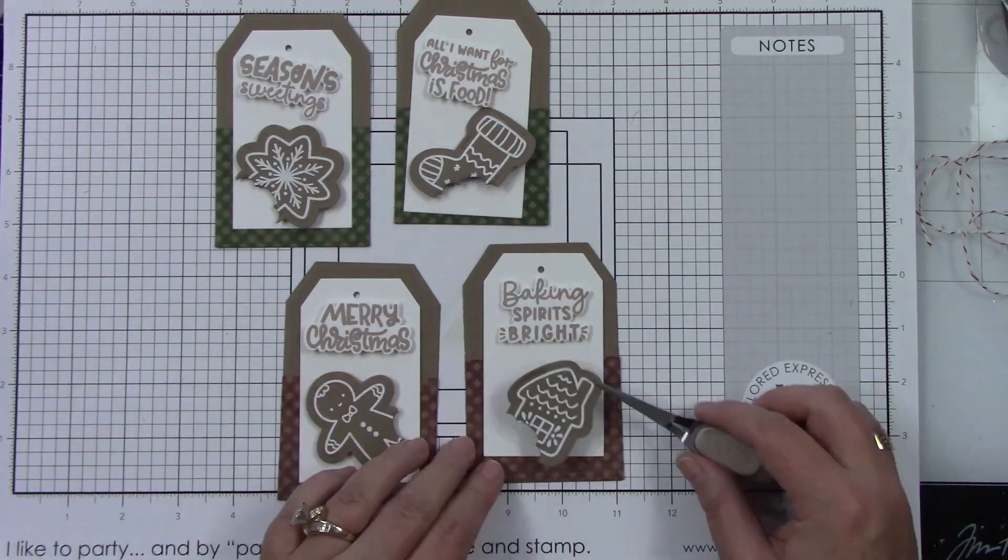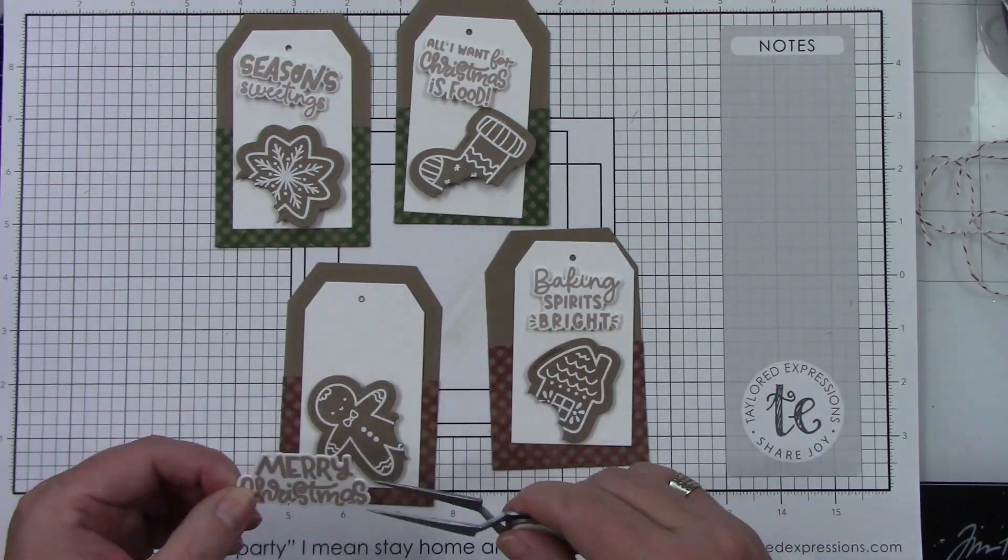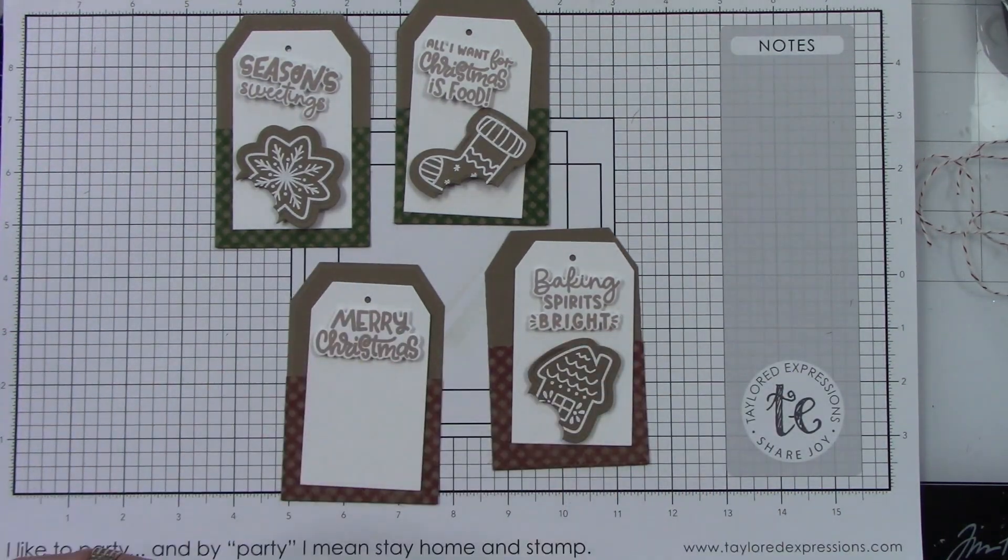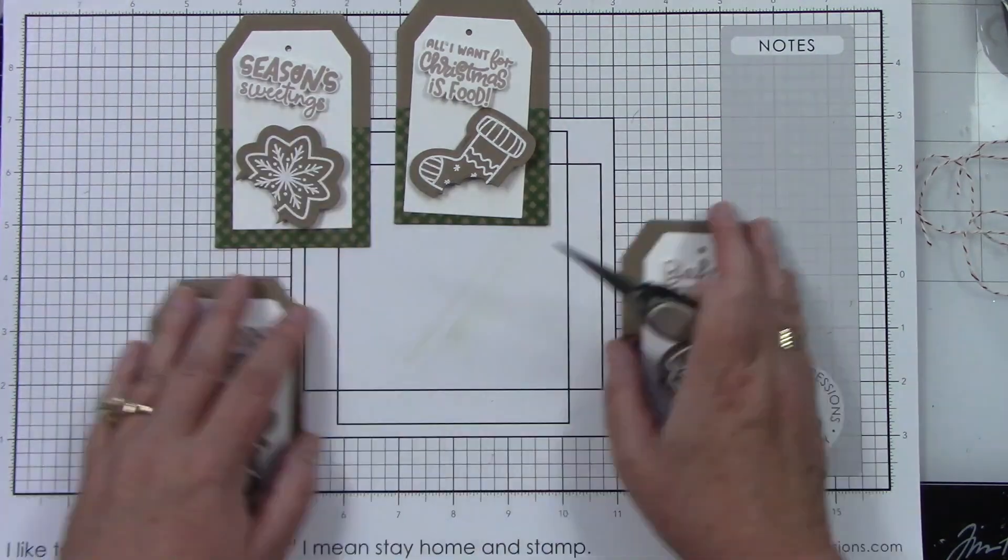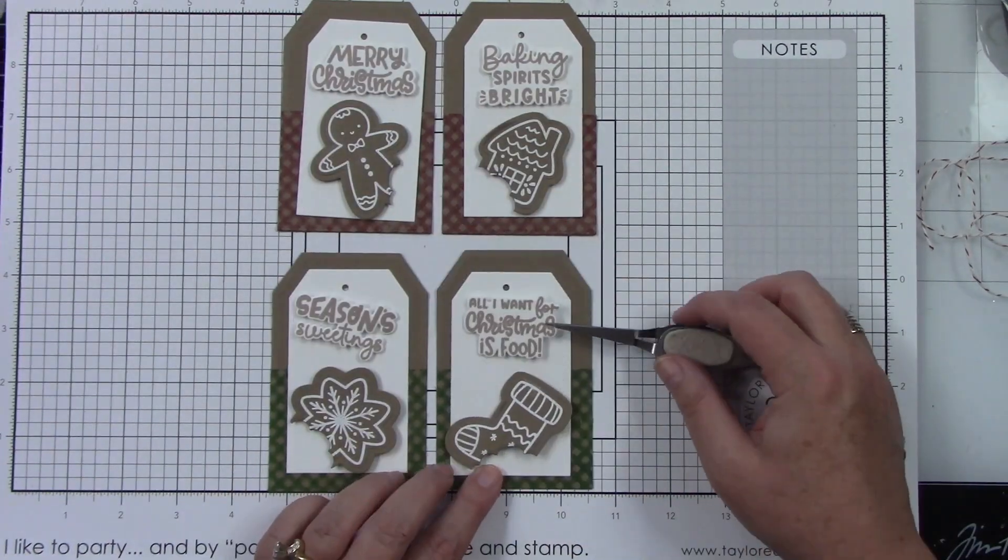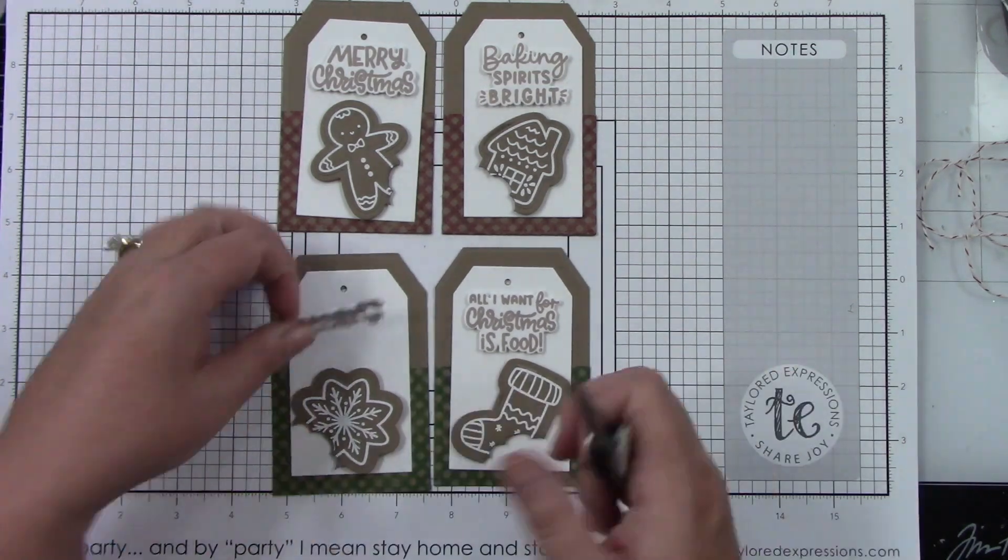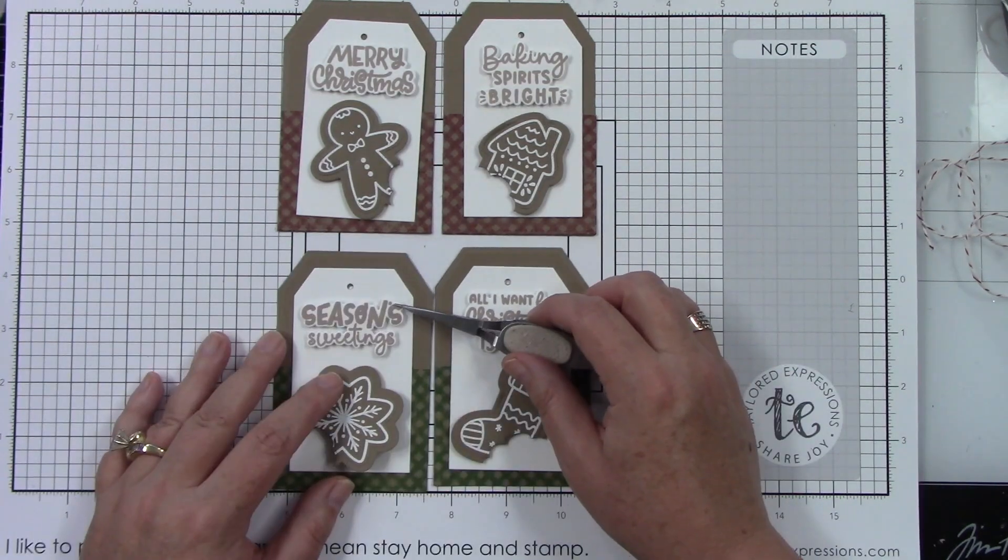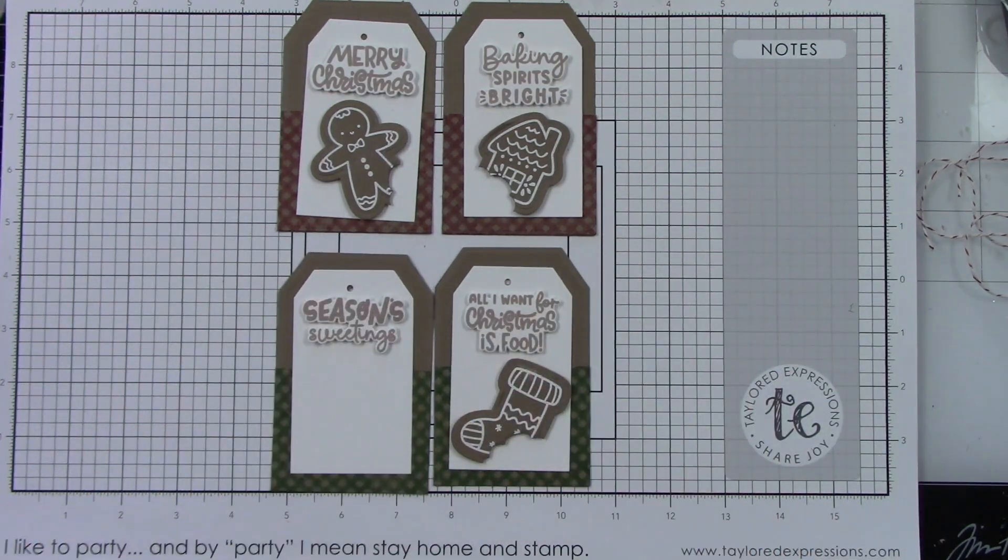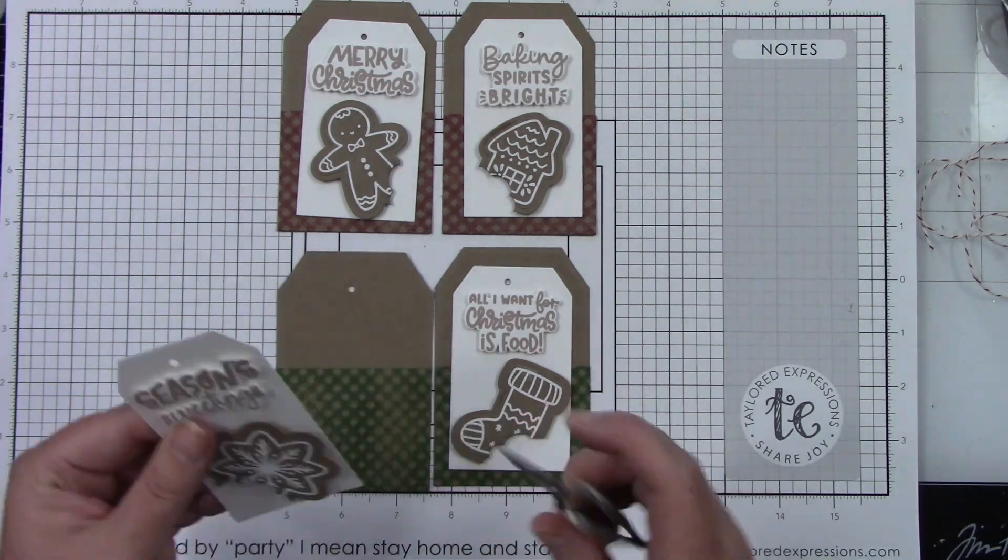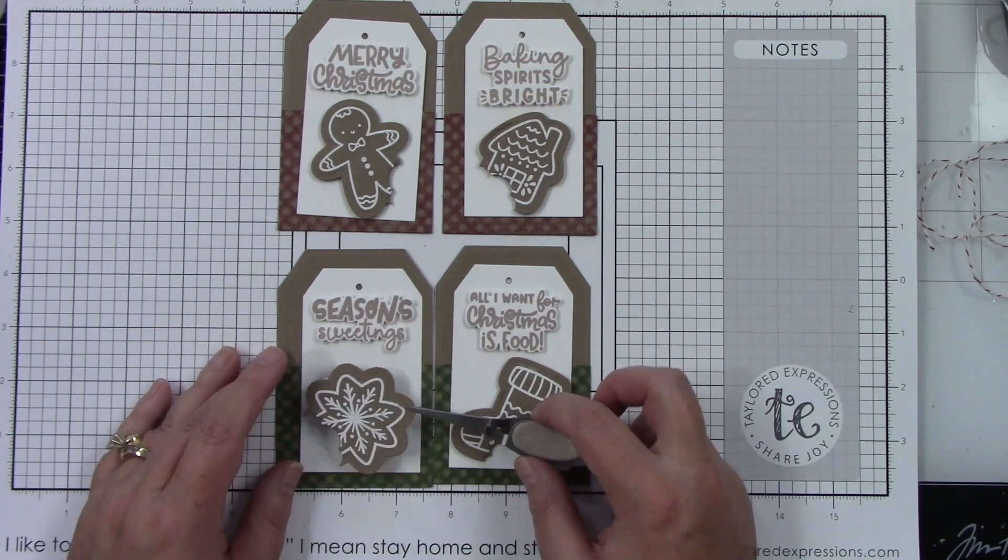Now I have all of my sentiments and my images with some foam adhesive behind them. I'm just going to adhere that to that white tag. Look at how cute these are, I just love these. I have some baking twine in my stash - a red and white one and a green and white one - and I'm going to be using those that match the green and the red. I'm going to stick those through.